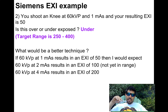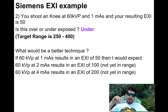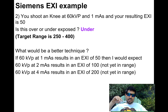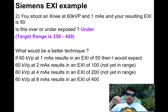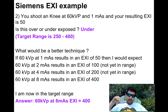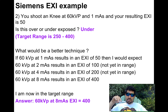I double the mAs again. Now I'm at 4 mAs and I get an EXI of 200. Am I in range? Nope, not yet in range. I'll double my mAs again. I'll shoot with 8 mAs and get an EXI of 400. Now we're in range. I could stop there — that's a perfectly acceptable answer: 60 kVp, 8 mAs, EXI 400.